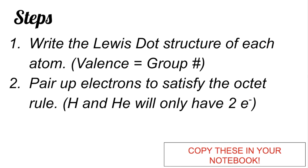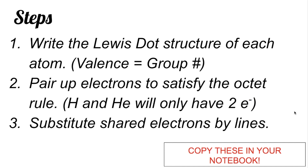Step number two: pair up electrons to satisfy the octet rule. Your atom should have eight valence electrons to become stable. Remember that hydrogen and helium can only have two electrons for them to become stable. Step number three: substitute shared electrons by lines. One line means one pair of shared electrons, since in covalent bonding electrons are not transferred but only shared.